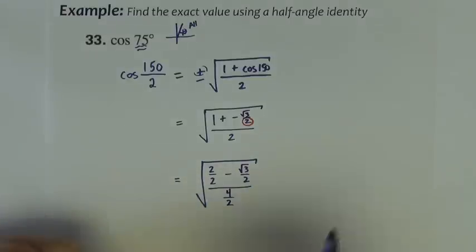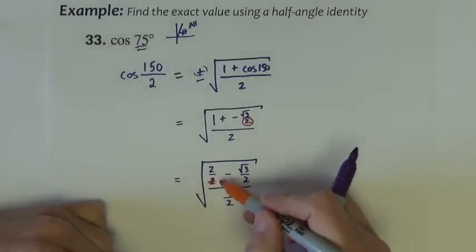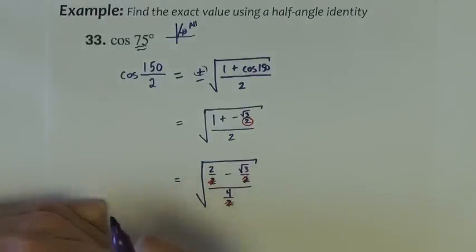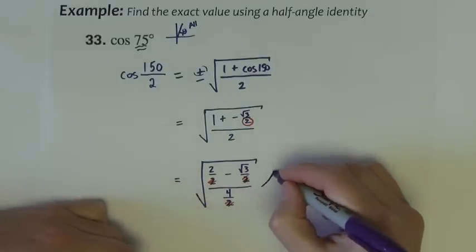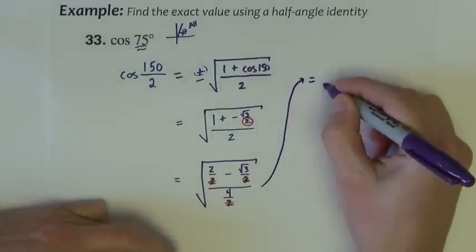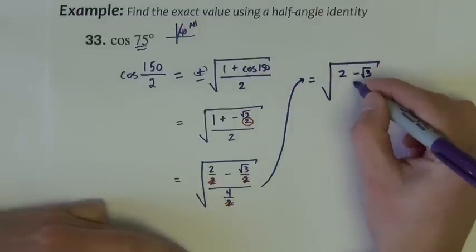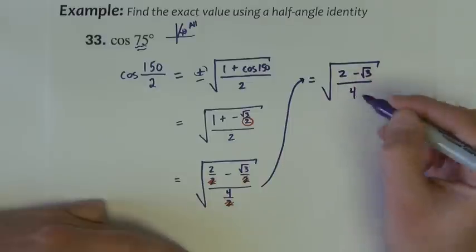Now if they're all written as fractions over 2, then those 2s can all cancel out. So this becomes square root of 2 minus square root of 3 over 4.